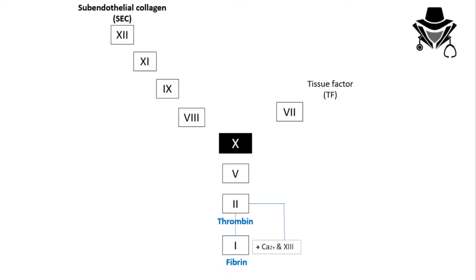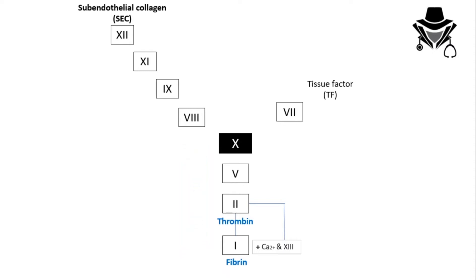There's an easy way to remember the common pathway: go in the opposite direction and multiply factors 1, 2, and 5 — which equals 10. After that, fibrin along with calcium and factor 13 will form a fibrin meshwork and stabilize the plaque.